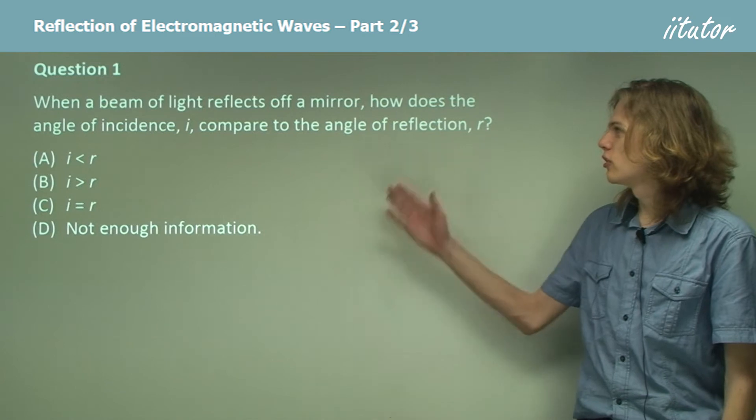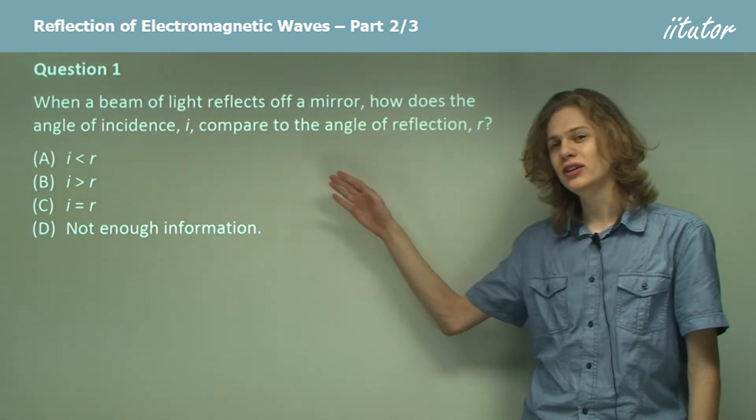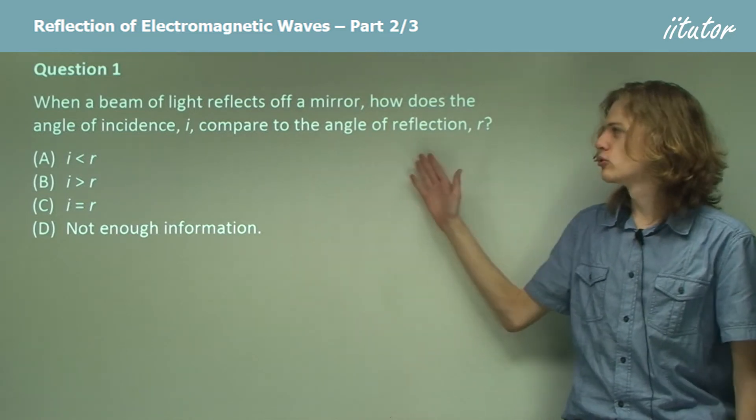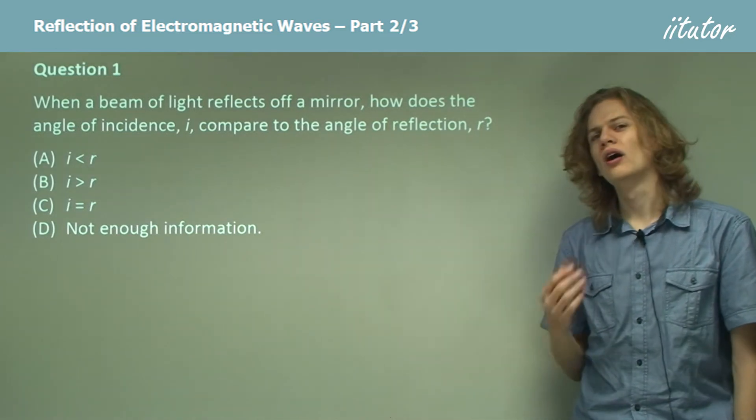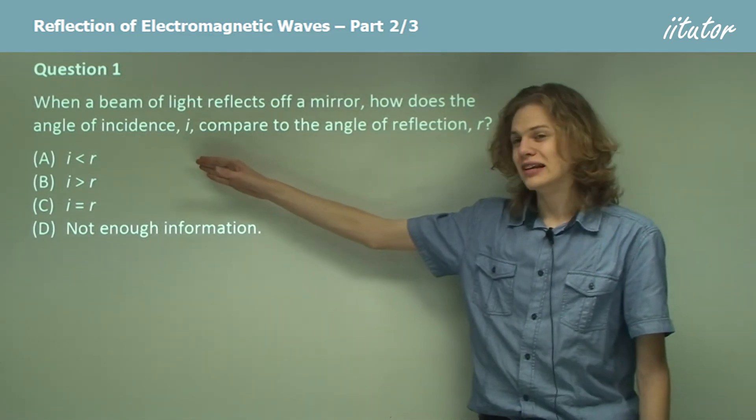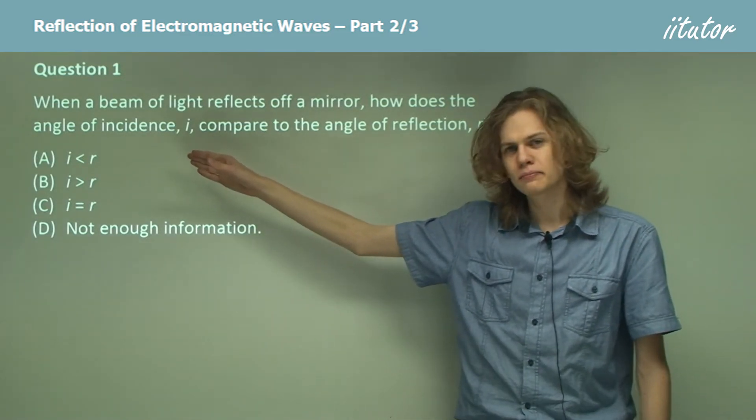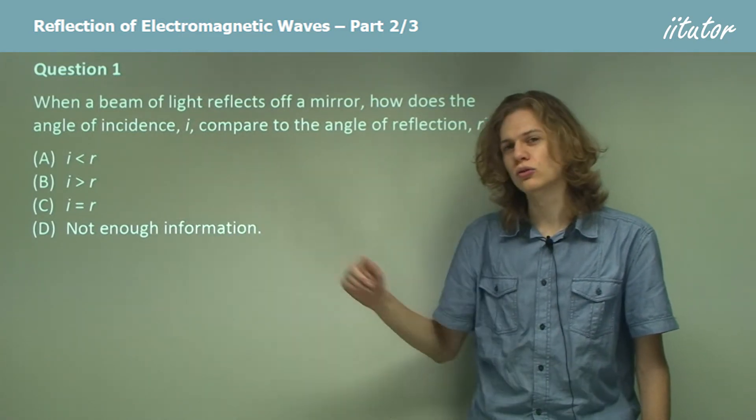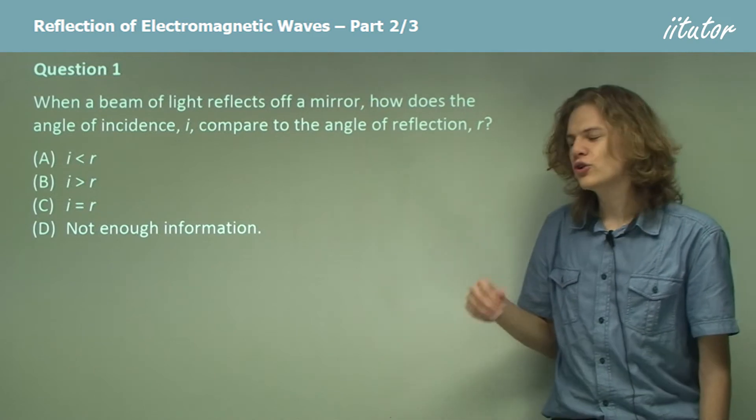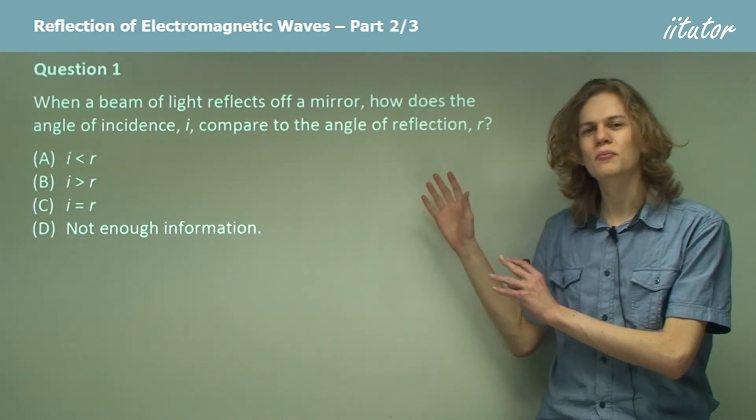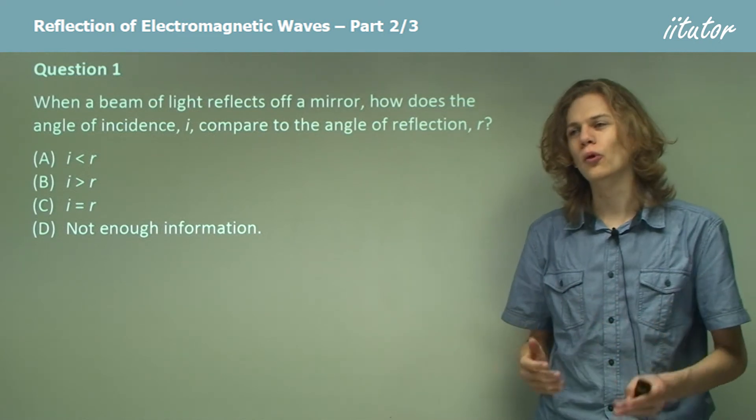When a beam of light reflects off a mirror, how does the angle of incidence, which we're going to call i, compare to the angle of reflection, which we're going to call r? We have a few options. The angle of incidence is less than the angle of reflection, is more than the angle of reflection, is equal to the angle of reflection, or we don't have enough information to tell. The question hasn't given us enough information to let us know what the correct answer is.